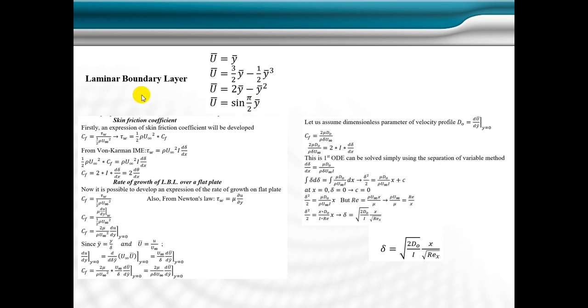We first start by the laminar boundary layer. There are four major velocity profiles for fluid flow over a flat blade. We present a relation of skin friction coefficient, and after that, we find out an expression for rate of growth of laminar boundary layer over a flat blade, as indicated here.